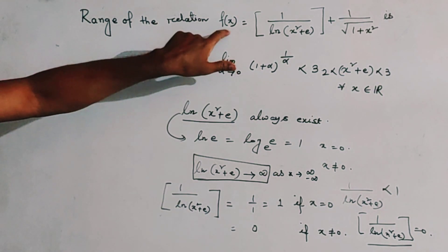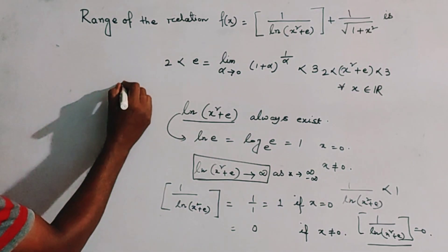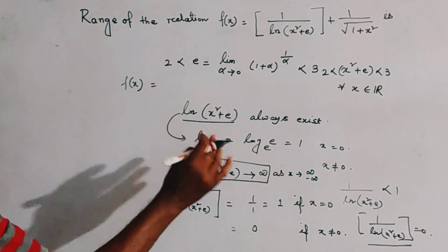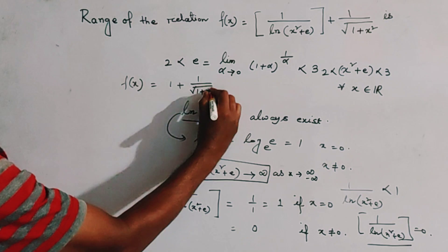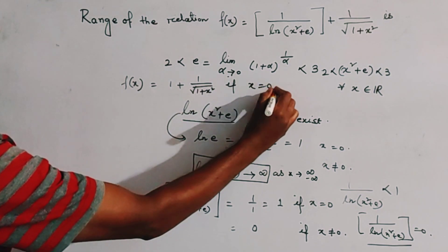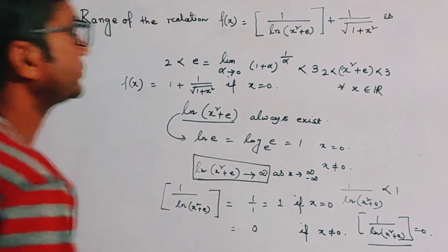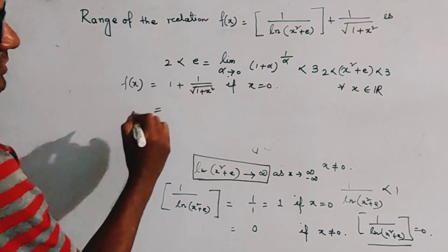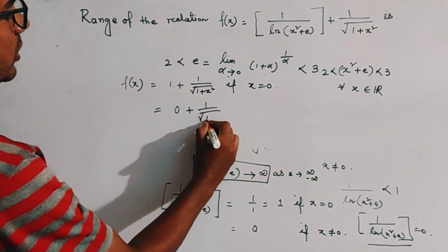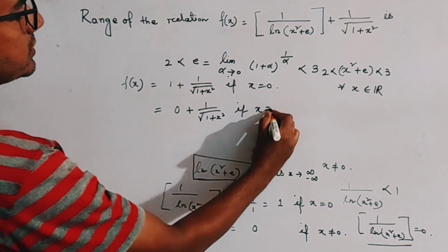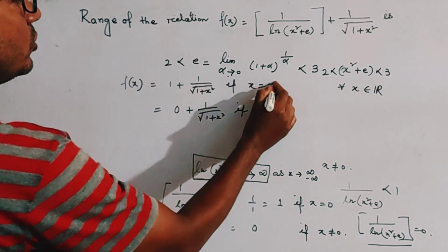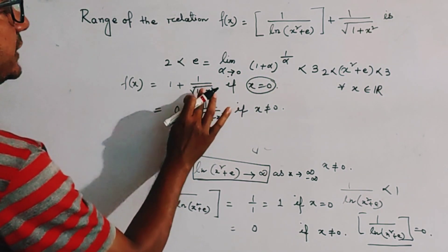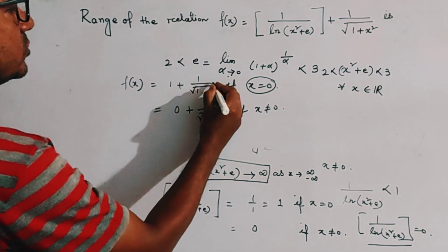From the given function, we can write f(x) as: f(x) = 1 + 1/√(1+x²) when x = 0, and f(x) = 0 + 1/√(1+x²) when x ≠ 0. If x = 0, we put x = 0, and this value becomes 1 + 1 = 2.